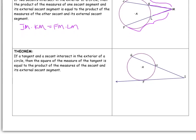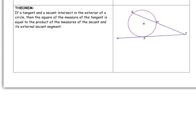Our last theorem involves a tangent and a secant. If a tangent and a secant intersect in the exterior of a circle, then the square of the measures of the tangent is equal to the product of the measures of the secant and its external secant segment.